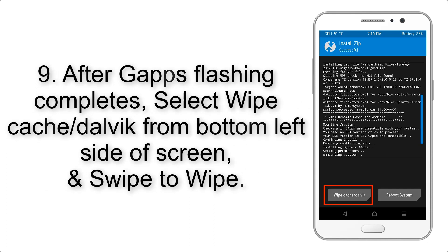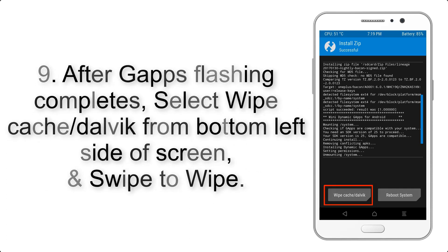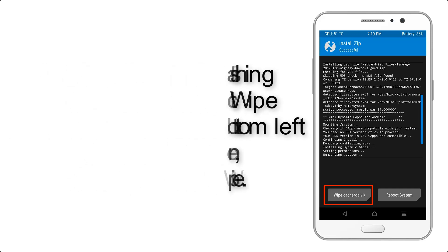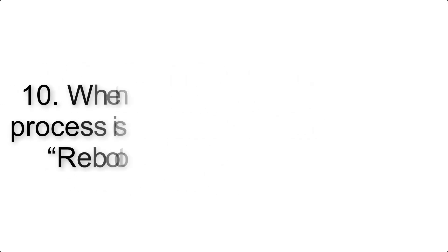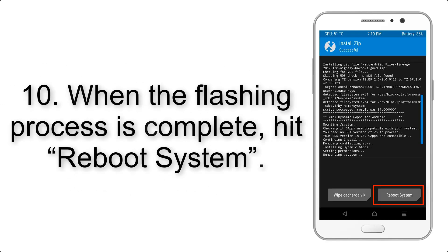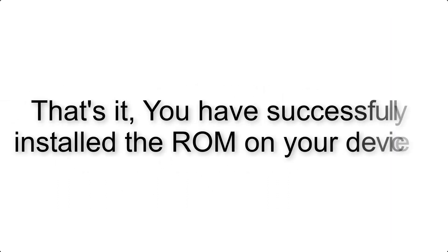Step 9: After GApps flashing completes, select Wipe Cache and Dalvik from the bottom left side of the screen and swipe to wipe. Step 10: When the flashing process is complete, hit Reboot System. That's it — you have successfully installed the ROM on your device.